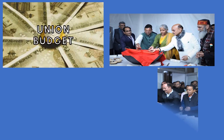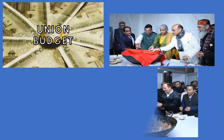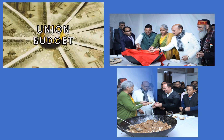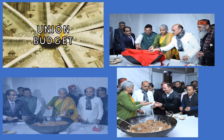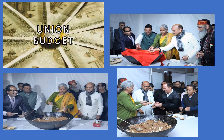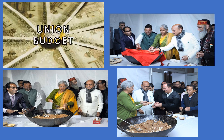In mid-January, the process of printing the budget begins. The printing press is underground, below North Block. It starts with the traditional Halwa ceremony. Due to secrecy, a number of key officials and printing staff are locked up in the Finance Ministry, where they will stay for the next couple of weeks.